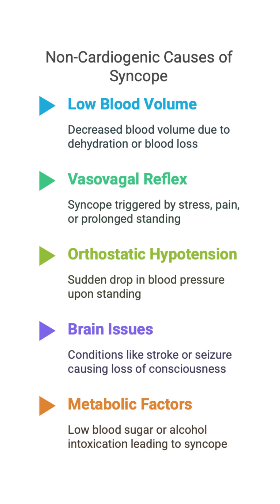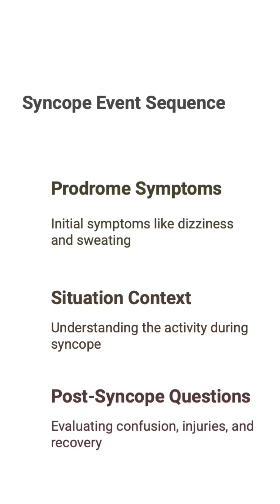When someone faints, getting a good history is super important. Key questions include: were there any warning signs or prodrome, like dizziness, nausea, or sweating? What were they doing when they fainted — standing for a long time, exercising? Did it happen after a sudden pain? And what happened after they regained consciousness — were they confused, did they hurt themselves, and how long did it take to feel normal again?